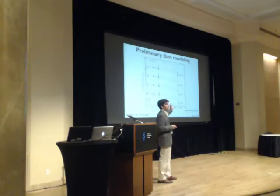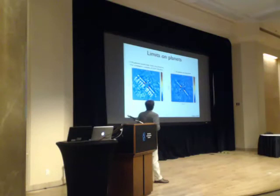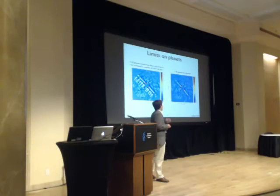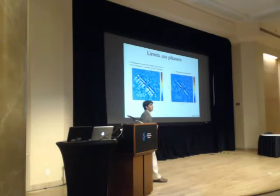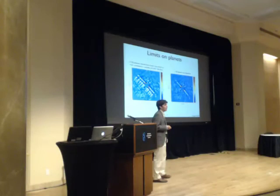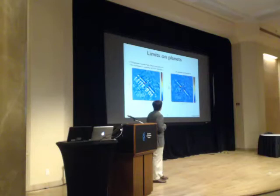We also injected artificial planets to see what we could have detected. Notably, we placed them in the plane of the disk rather than around the star, since any planet is more likely to be found there. Three Jupiter-mass planets are basically all recovered, but close to the star, where the disk is so bright, you can't recover them. One Jupiter-mass planets I wouldn't call any of those detected. So there are interesting things going on here.